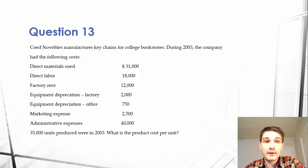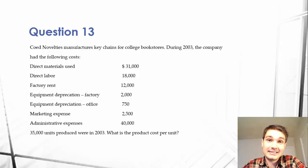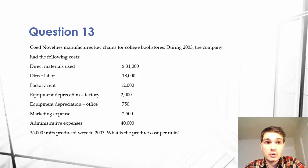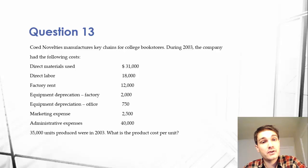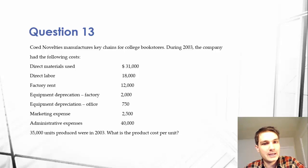I'm Devin Coombs and today I will be covering question 13 in our series about managerial accounting. This question reads: Coed Novelties manufactures key chains for college bookstores. During 2003, the company has the following costs.